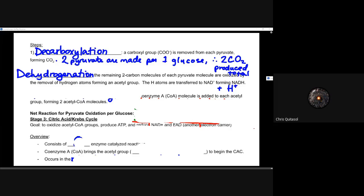That's through the process of decarboxylation. The second step is dehydrogenation, which refers to the hydrogen atoms. Those remaining two-carbon molecules of each pyruvate molecule are oxidized by the removal of hydrogen atoms, and it forms that acetyl group with only two carbons. The hydrogen atoms are then transferred to NAD+ to form NADH plus another hydrogen ion — this is what's going to be needed for those electron transport chains later, where the vast majority of our ATP will be created.